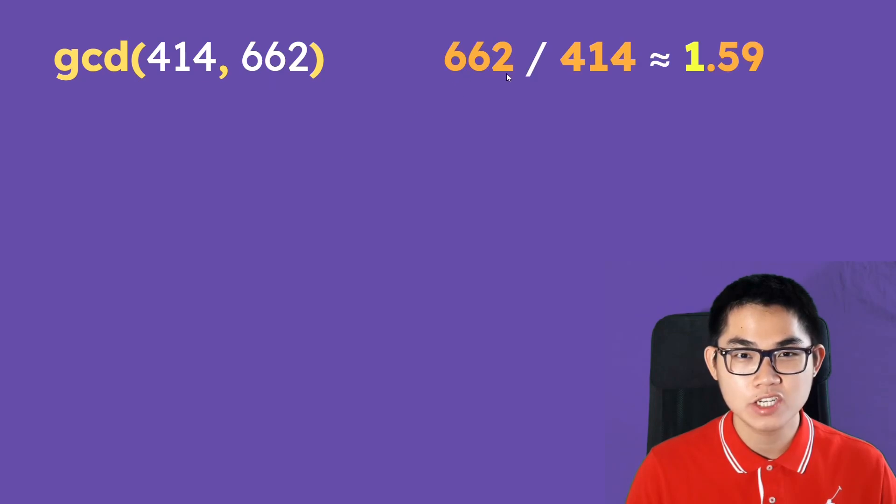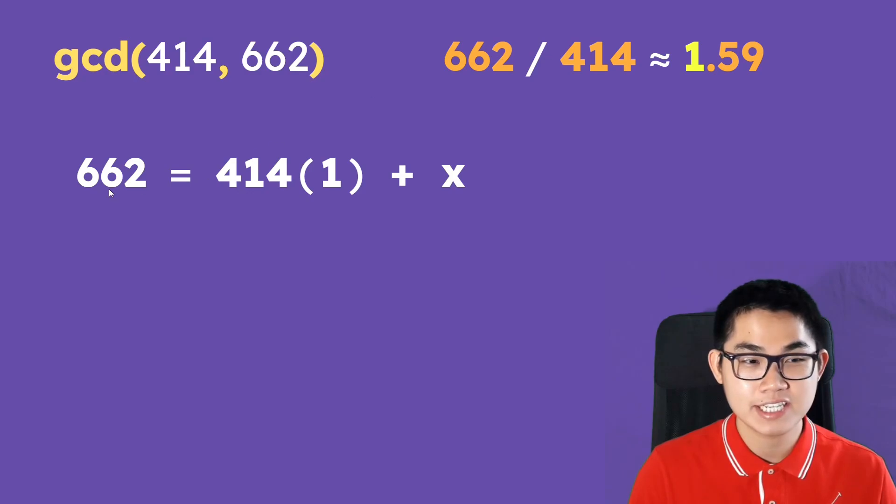The first step is to take the larger number, which is 662, and divide it by 414, which will give you approximately 1.59. This means that 662 is equal to 414 times 1, and because we are getting a decimal, this means that there has to be some remainder, so plus x.